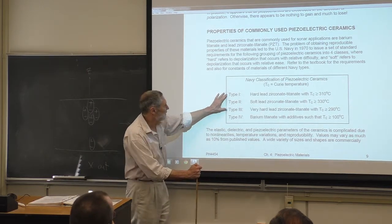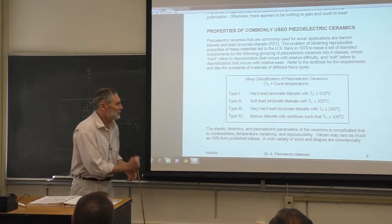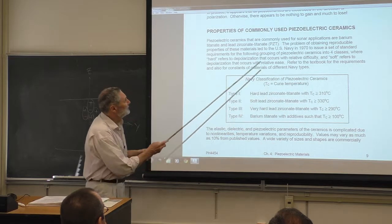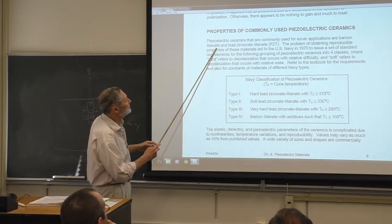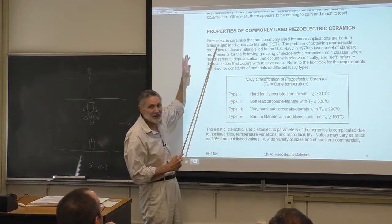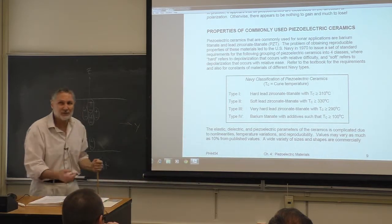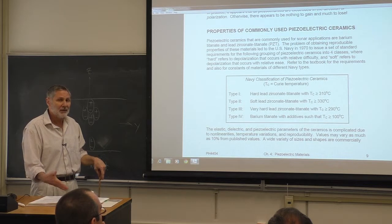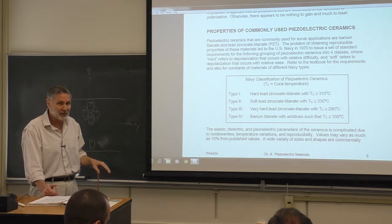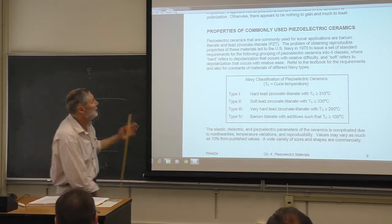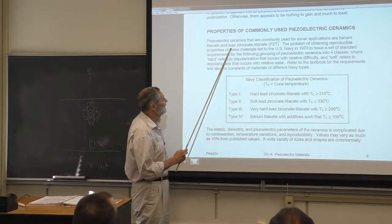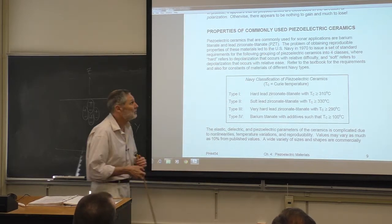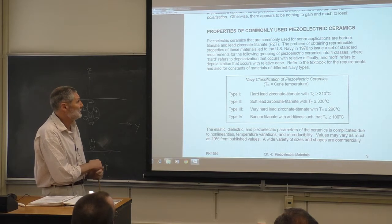The standard materials are barium titanate — which caused a sort of revolution as the first ceramic used in sonar in World War II — and the much more popular lead zirconate titanate, known as PZT, which continues to be the really popular one.